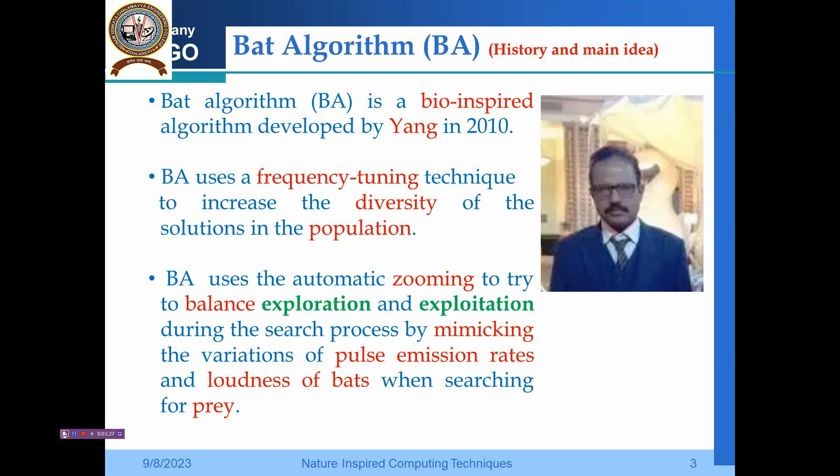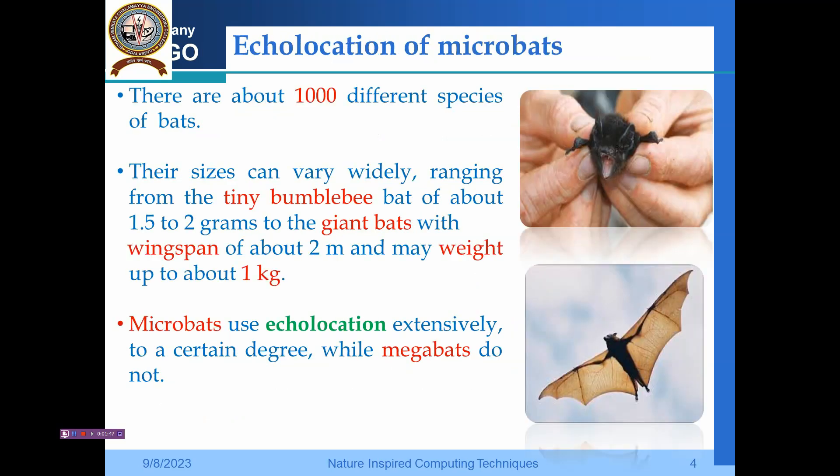As you know, bats usually are active in the nighttime and they search for prey. They cannot use light, so they cannot use the radar technique. Rather, they use sonar—the sound wave will be propagating and when it is reflected back, they will be able to identify the prey.